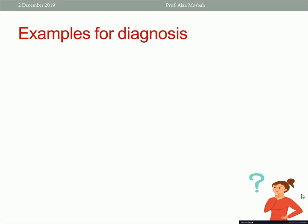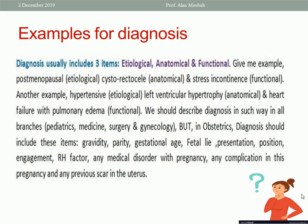Here is an example for diagnosis. As we said, a complete diagnosis should include etiological, anatomical, and functional. An example from gynecology: postmenopausal cystorectocele with stress incontinence. Postmenopausal is the etiological diagnosis, cystorectocele is the anatomical, and stress incontinence is the functional. Another example from medicine: hypertensive left ventricular hypertrophy with heart failure and pulmonary edema. Hypertensive is the etiological, left ventricular hypertrophy is the anatomical, and pulmonary edema or heart failure is the functional. You should include all three in your answer.